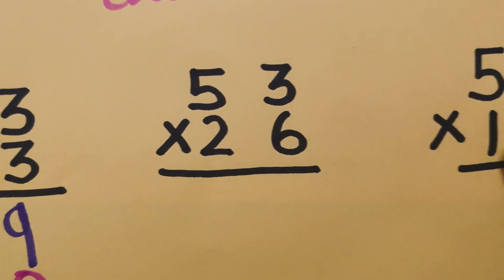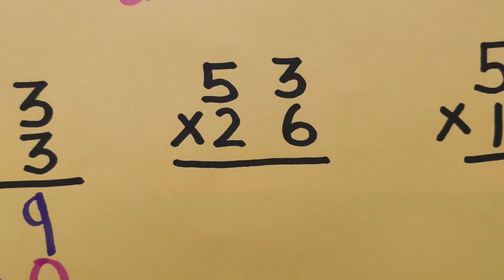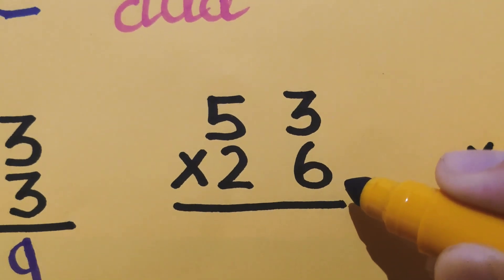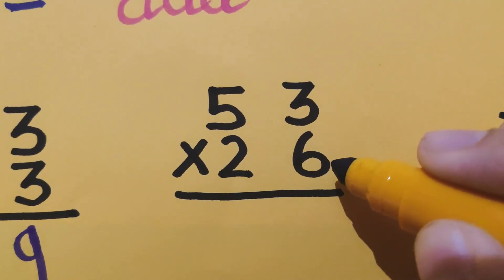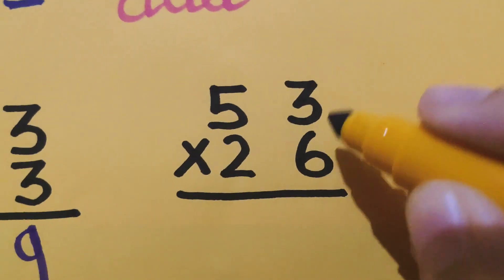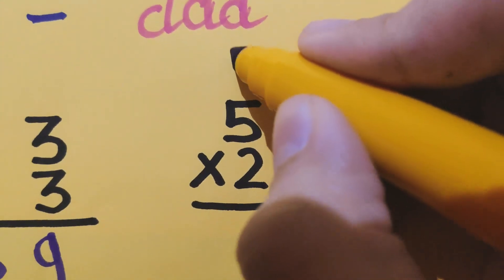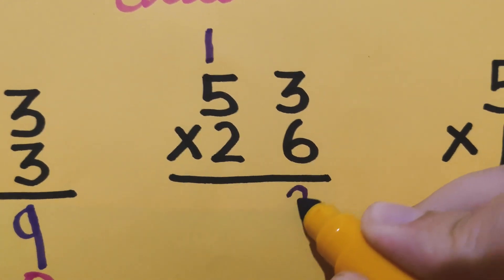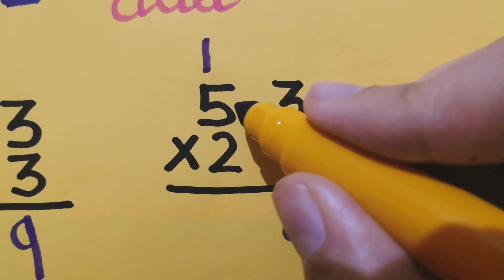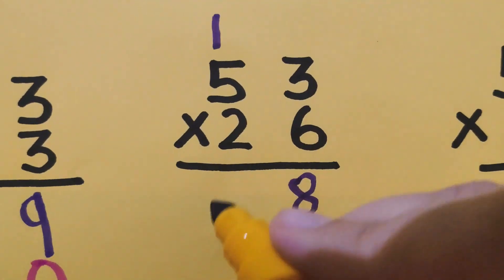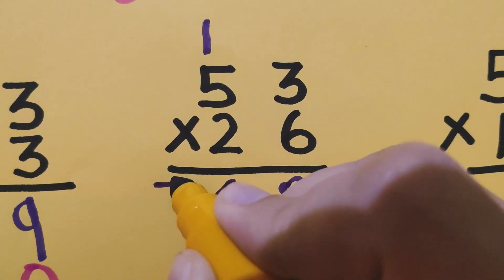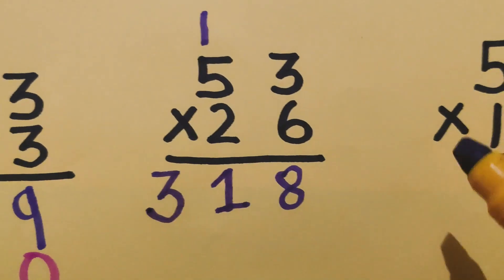Let's move to another example children: 53 multiplied by 26. First step was multiplying with the ones digit, so let's start. 6 times 3 is 18 — so 1 carry, 8 here. 6 times 5 is 30, plus 1 is 31 — so 1 here and 3 also here.